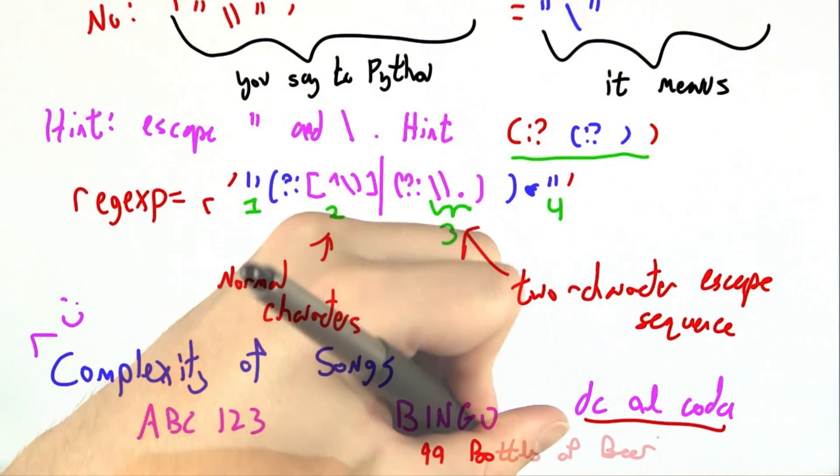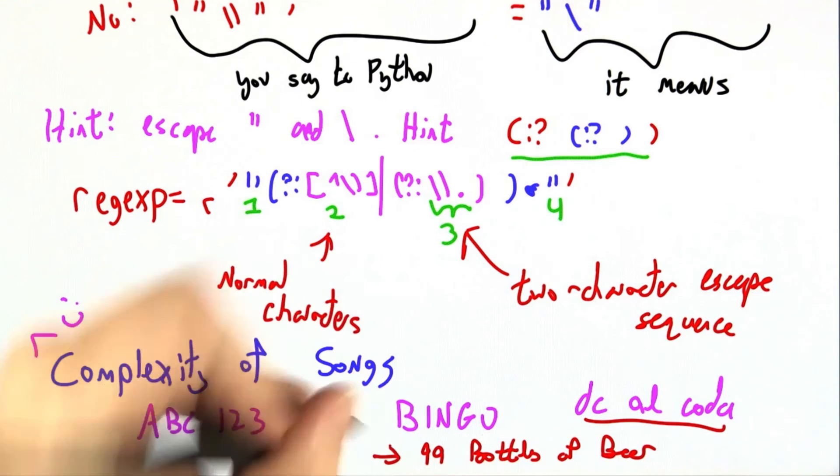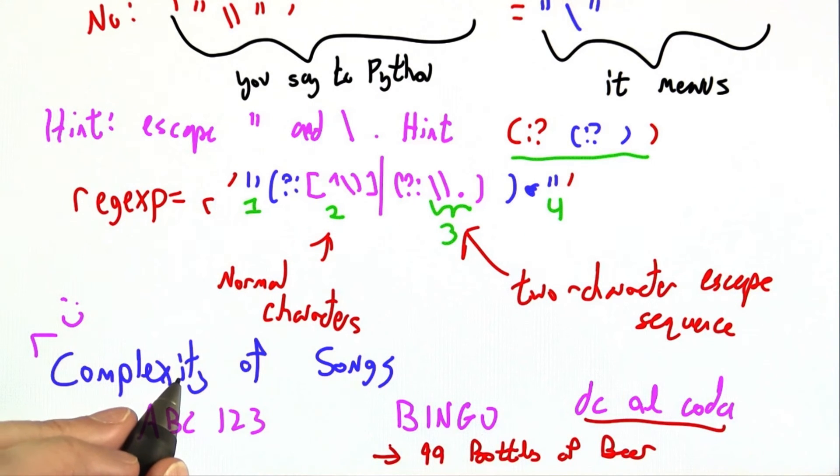However, there is one song that is actually too complicated for regular expressions, the dreaded 99 bottles of beer on the wall. If you actually want the counting to work out correctly, 99 to 98 to 97, we can't fit it in a regular expression framework. We'll have to return to that later and eventually we will be smart enough to sing this song. For more info on this, Don Knuth, a computer scientist, has written an essay on the complexity of songs.